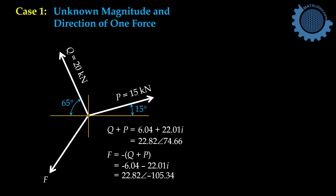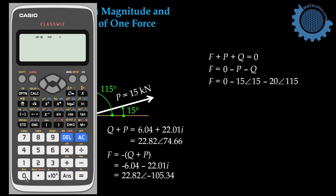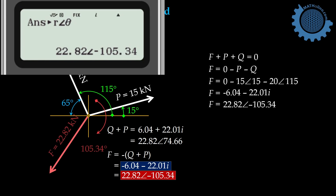We don't actually need the diagram to solve for F. We can go directly to the given figure, using the complex mode of our calculator. From the diagram, F plus P plus Q equals zero because these three are in equilibrium. Therefore, F equals 0 minus P minus Q. Substituting: 0 minus 15, shift angle 15, minus 20, shift angle 115. Equals: negative 6.04 minus 22.01i. In polar form: 22.82, angle, negative 105.34.